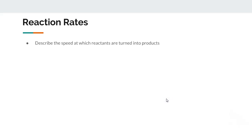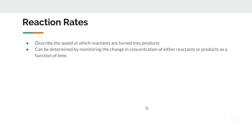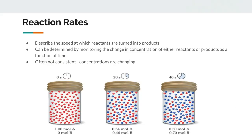We use the term reaction rates to refer to the speed at which reactants are turned into products. This is normally tracked by monitoring the change in concentration over time — either the change in concentration of a reactant or the change in concentration of a product. As the reaction progresses, we're changing our concentrations of reactants and products, and because those concentrations are changing, the reaction rate itself is usually not consistent. The fastest point of the reaction is going to be that initial second. The first second has a higher rate than the second second, which has a higher rate than the third second, because those concentrations are changing every second.